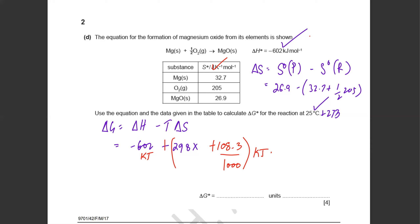The final value for delta G comes out to be minus 569.7 kilojoules per mole. Be careful with the signs throughout the calculation.